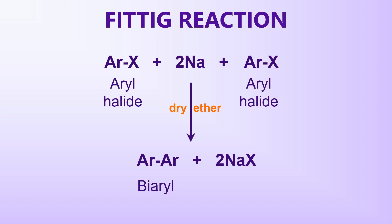The Phytic Reaction involves treating an aryl halide with sodium in inert solvents like dry ether or tetrahydrofuran to produce bi-aryl compounds. Here, Ar represents the aryl group and X represents a halogen atom other than fluorine. The resulting bi-aryl product contains a carbon-carbon bond between two aromatic ring systems.